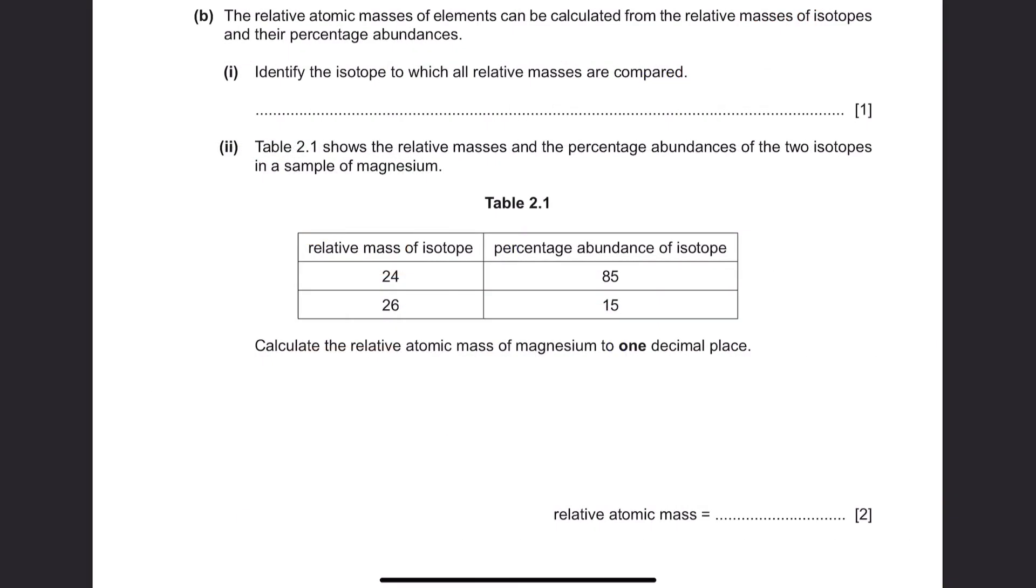Question B. The relative atomic masses of elements can be calculated from the relative masses of isotopes and their percentage abundances. Part 1. Identify the isotope to which all relative masses are compared. This is a pretty standard answer. The isotope use is carbon-12.